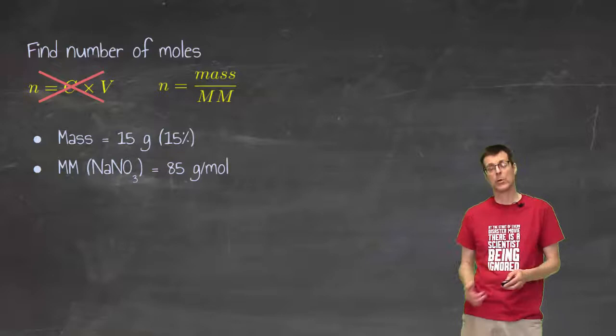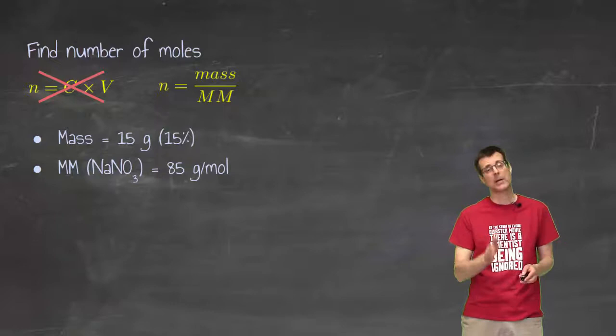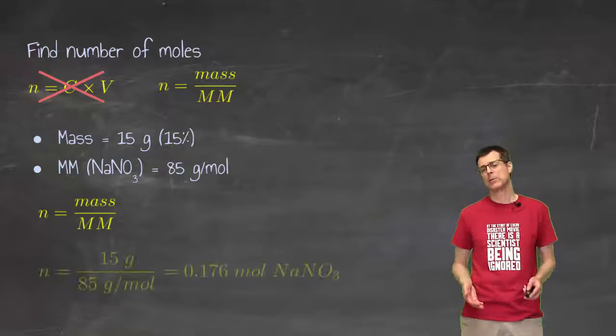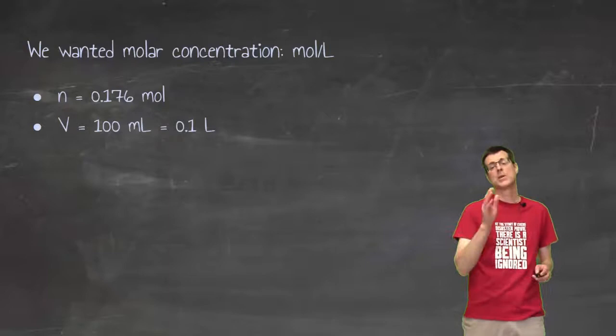I can find number of moles because I have a mass and I have a chemical formula, which means I have a molar mass. So, 15 grams in 100 milliliters because 15% and a molar mass based on a chemical formula and a periodic table, which I've got, gives me 85 grams per mole. If you don't know where the 85 grams per mole comes from, find out because just reading it and working with that does not help you. You need to know how to get that number. So, mass divided by molar mass will give me the number of moles. That means 15 grams divided by 85 grams per mole is 0.176 moles of that solute. Done. No. Not done.